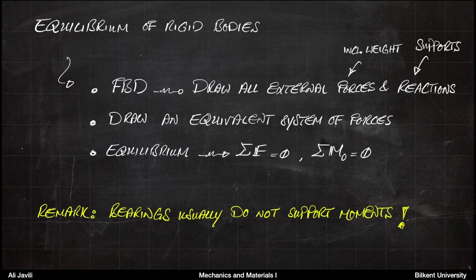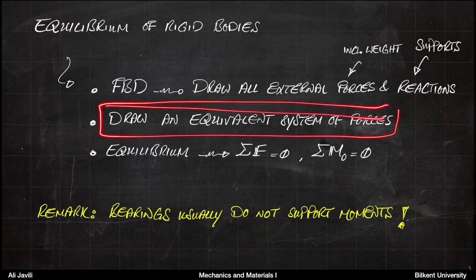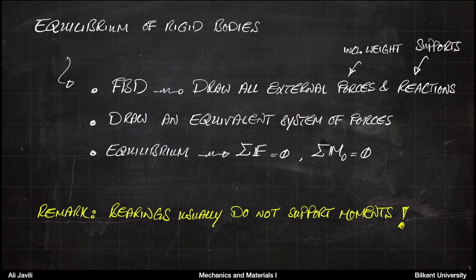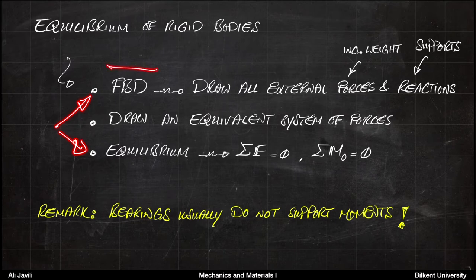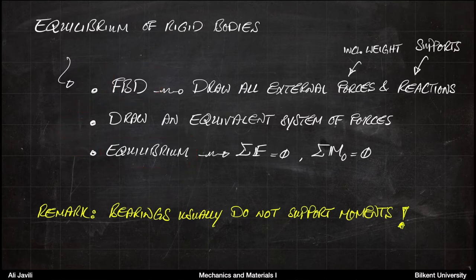Equilibrium of rigid bodies is in principle very similar to the equilibrium of points. The only difference is an intermediate step to draw an equivalent system of forces, but as we will see, this intermediate step is only to help you better understand the problem — it is not necessary to solve it. So again, this is a two-step process: Step 1, draw the free body diagram; Step 2, impose equilibrium. It's exactly what you did for a point.